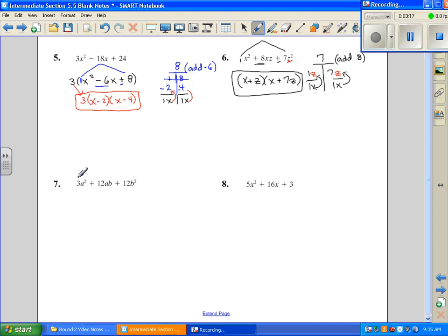So next in number 7, the first thing we're going to do is look for a GCF, and there is a 3. So the first thing we want to do is divide a 3 out of everything. So it's going to be 3, I'm left with a squared plus 4ab plus 4b squared.